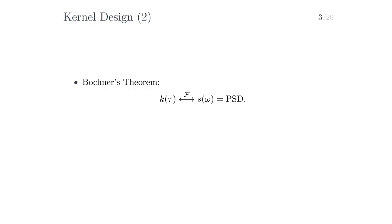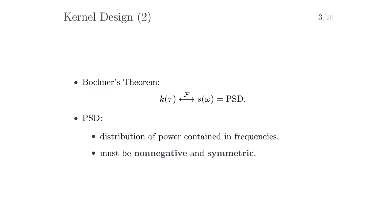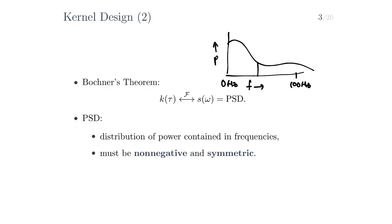Bochner's theorem tells us that a stationary kernel is characterized by its Fourier transform, a quantity that we call the power spectral density. The power spectral density is the distribution of power contained in frequency components that make up your signal. If we were to draw a power spectral density in a graph, there would be frequency on the x-axis — say, 0 Hz here and 100 Hz here — and power density on the y-axis, and the majority of the power would be contained in the low-frequency component.